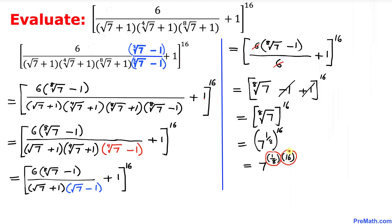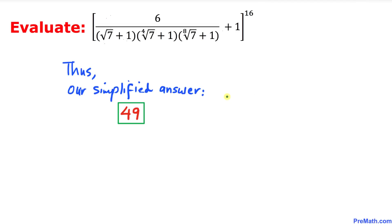Multiplying out these exponents, 1/8 times 16 gives us 2, so we get 7 to the power 2. And 7 to the power 2 is the same as 49. Thus our simplified answer to this problem turns out to be 49. Thanks for watching and please don't forget to subscribe to my channel for more exciting videos.